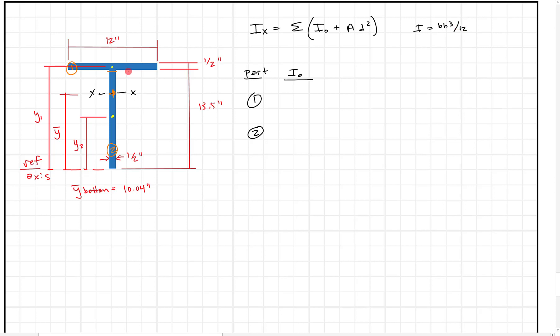And I naught is just going to use the formula for a rectangle because these are both rectangles. And I naught in this case is going to be for a rectangle we're going to say it's BH cubed over 12. And I can write that in. But for the first part, all we have is the B is going to be 12 inches times the height, which is a half inch cubed, all over 12. And when I do the math out for that, I get a small number. I get 0.13 inches to the fourth, pretty small.